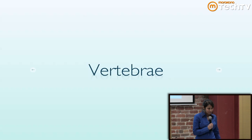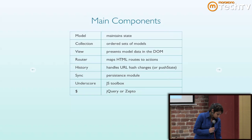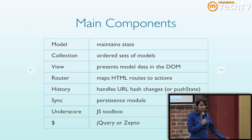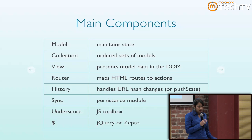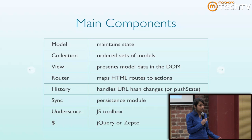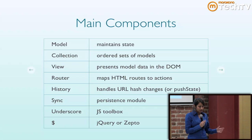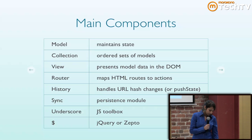The components of Backbone: there's a model, which maintains state; there's a collection, which Backbone separates from the model — that's pretty handy; there's a view; a router, which kind of takes the place of a controller, similar to routes.rb in Ruby; history, which deals with dispatching URL changes to the router; and sync, which is how it interacts with the server, along with Underscore and jQuery.